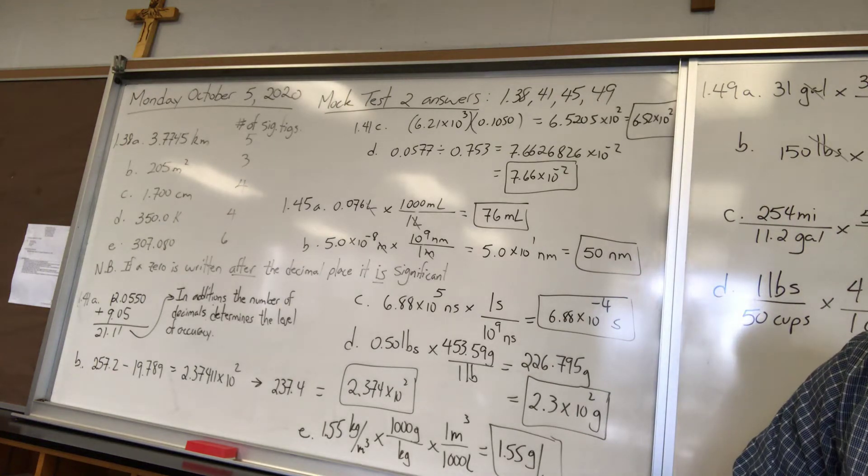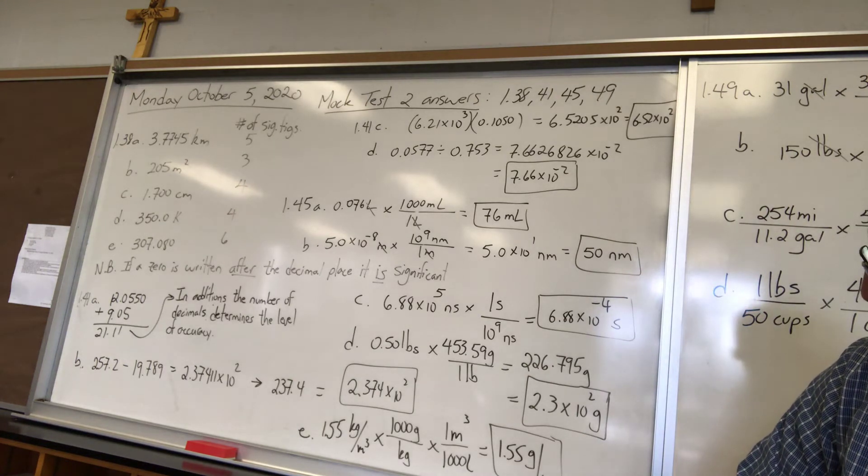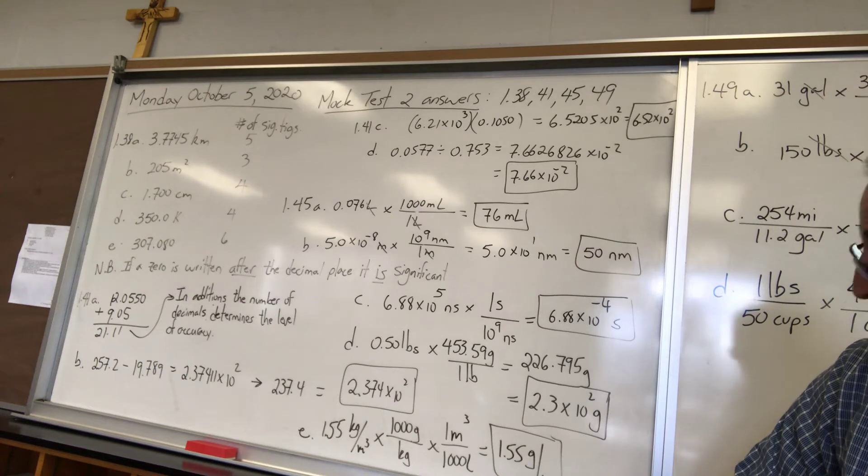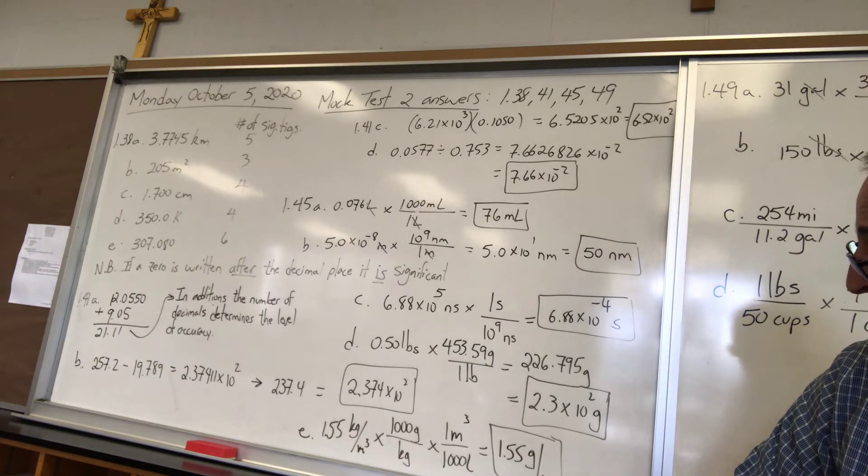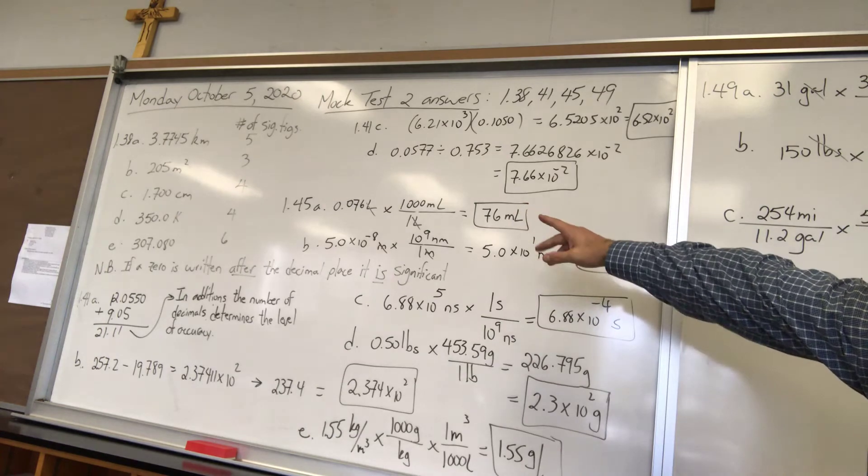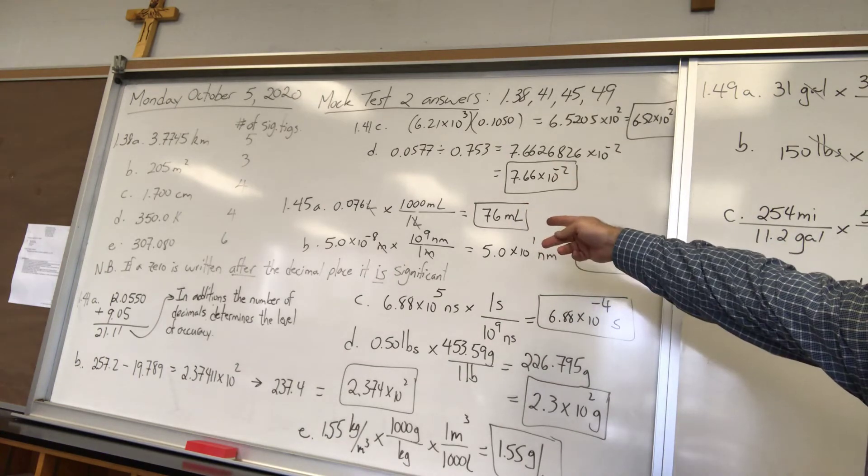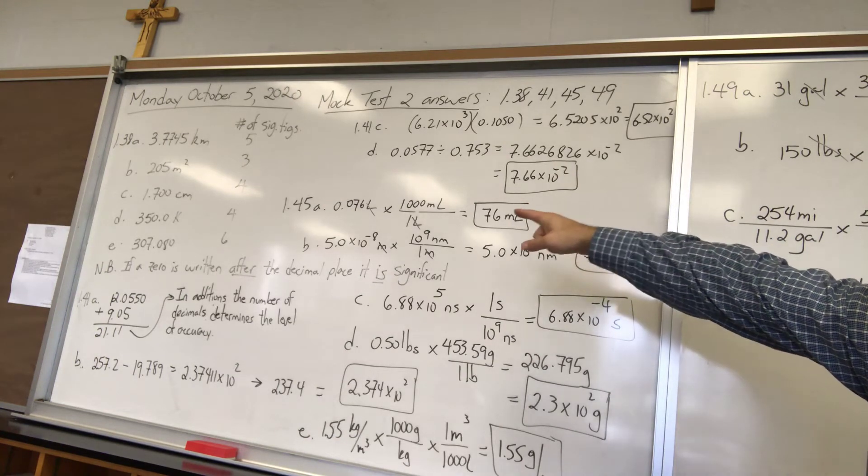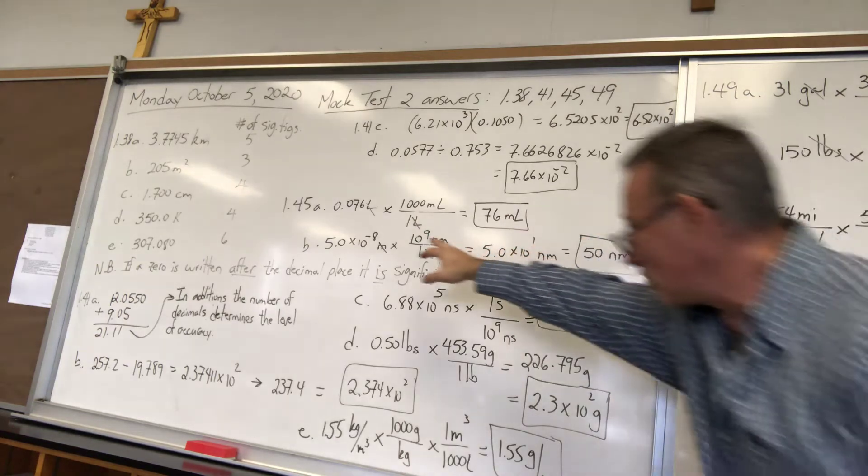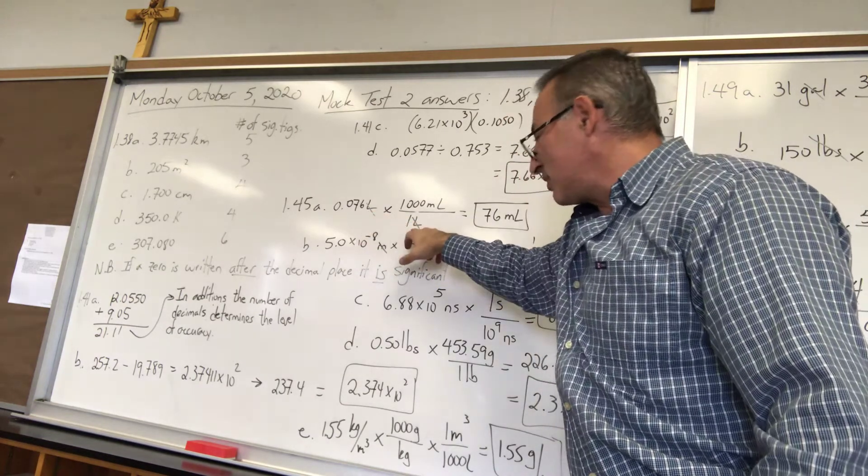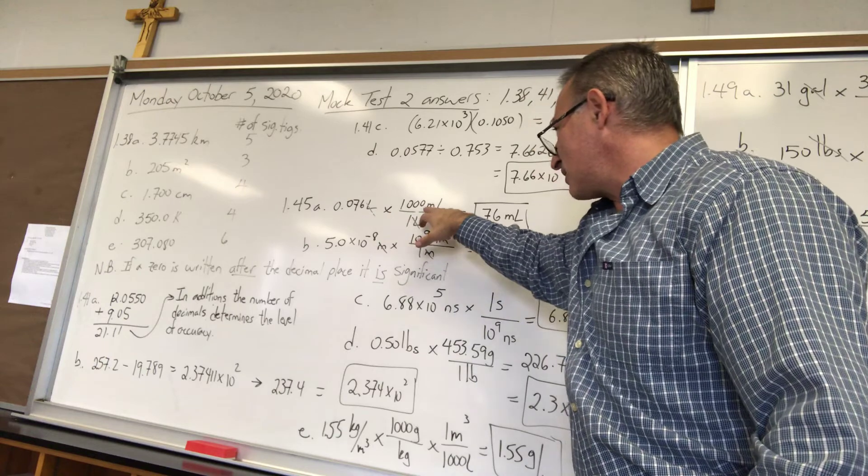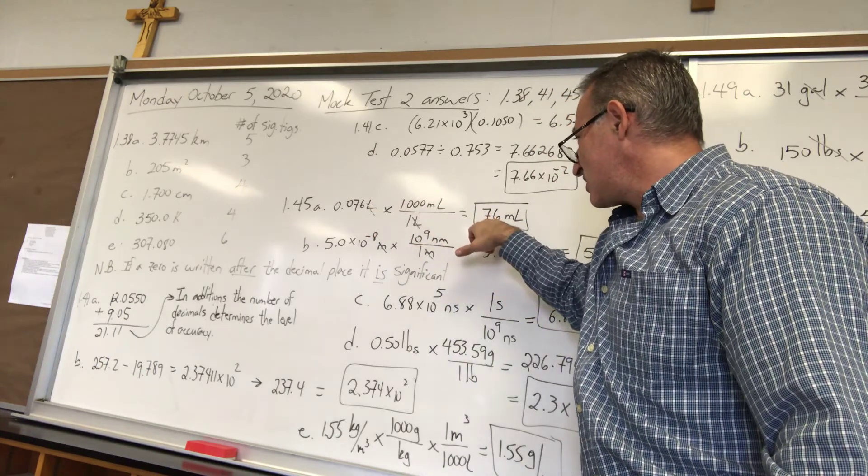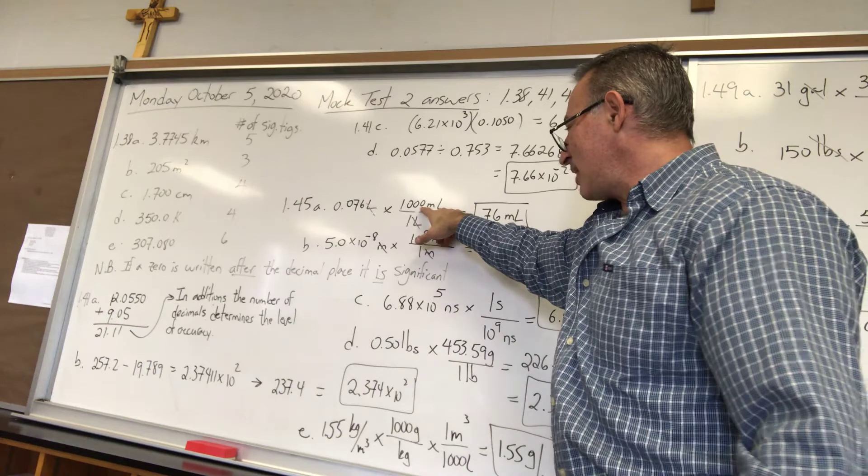Then 45A it says perform the following conversions. Of course when you're doing conversions you have to know what the conversion factor is. You have to know for example that there's a thousand milliliters per liter and you have to know which way to put it. Are you going to put the thousand on top or are you going to put the thousand on the bottom. The way you decide is what are you trying to cancel. You're trying to cancel the liters so you're going to put liters on the bottom and that allows you to cancel liters. A thousand times .076 gives you 76.